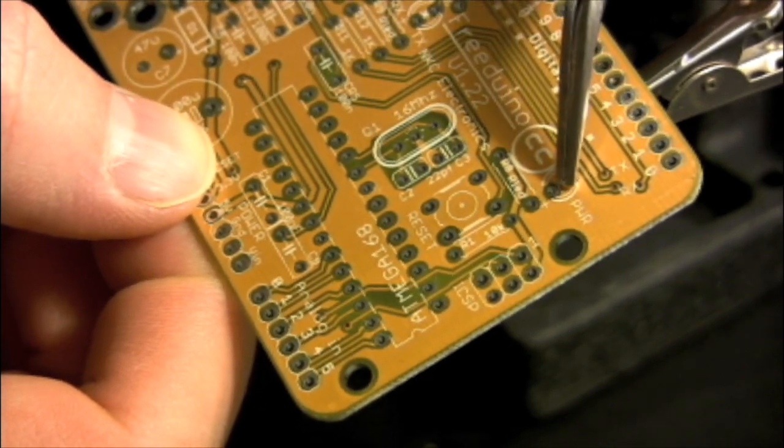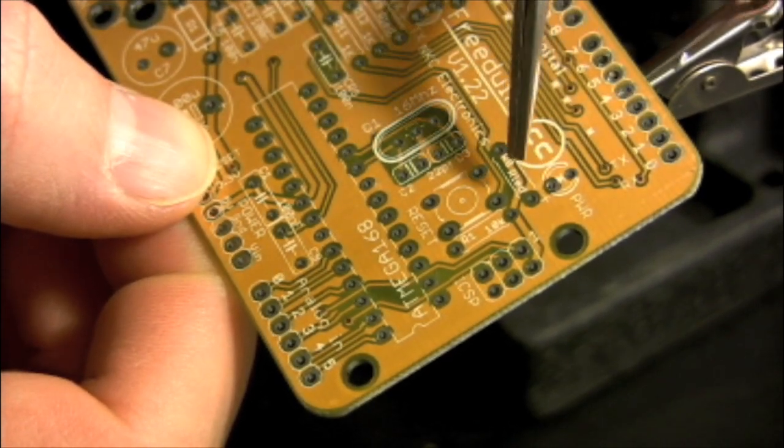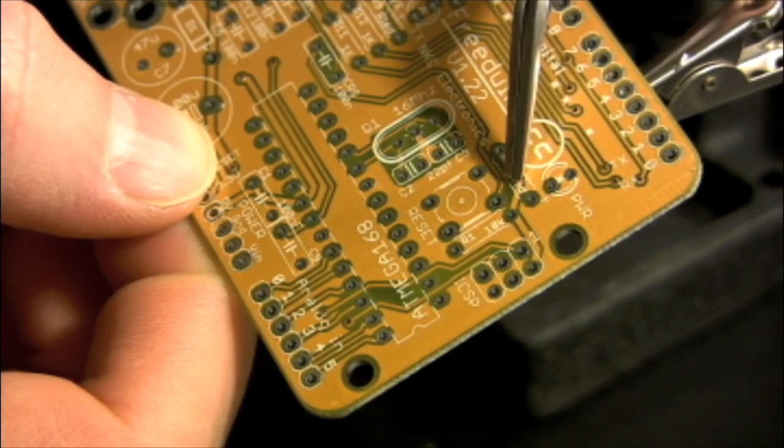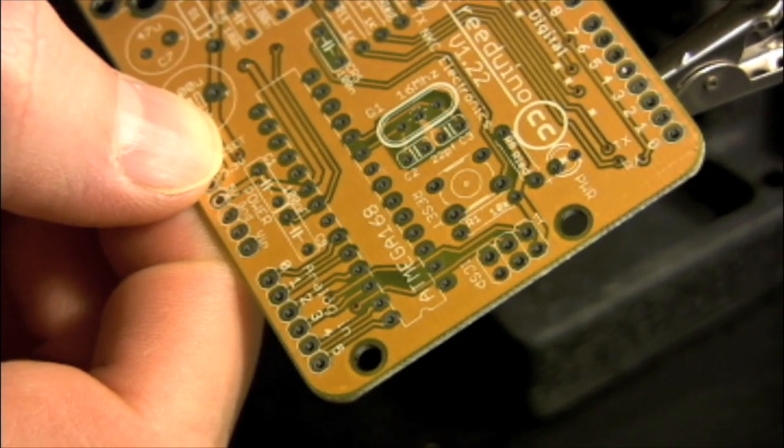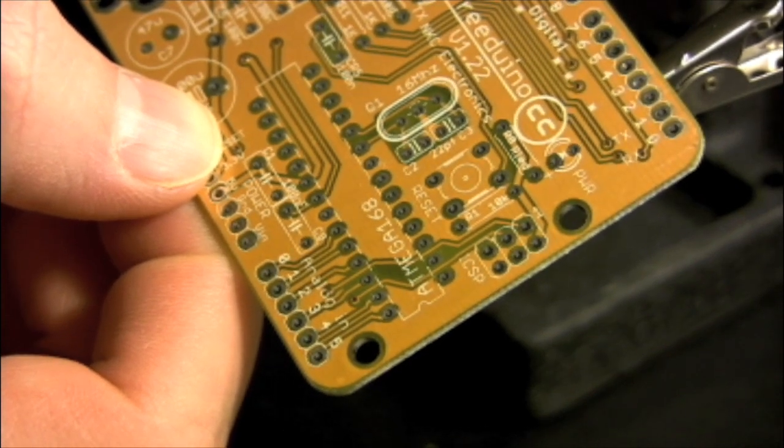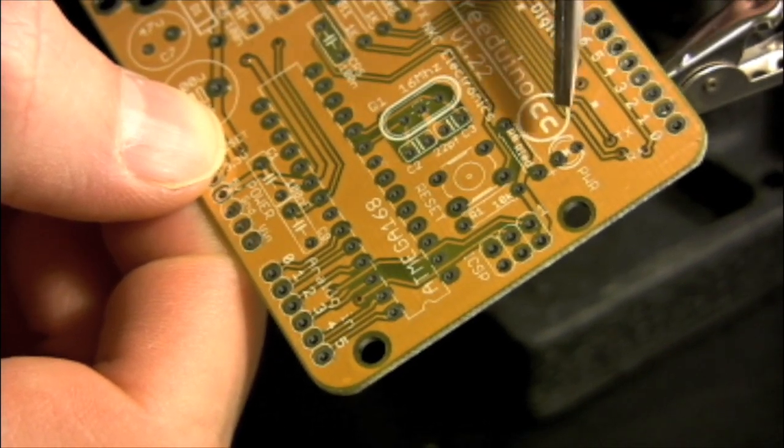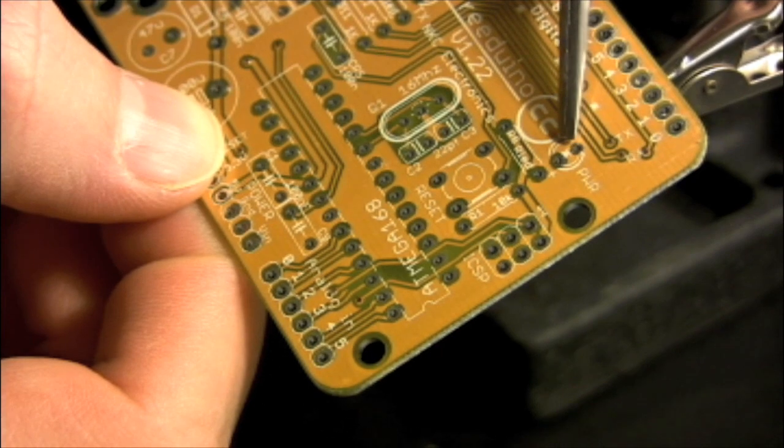Our first step will be to attach the power LED and associated resistor. Note how the artwork on the PCB shows the correct orientation of the LED.